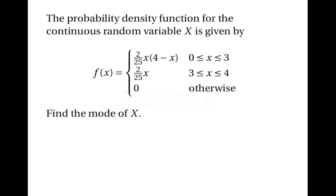Let's look at one more example. This time, suppose we have a probability density function defined in three pieces. When x is between 0 and 3, f(x) = (2/25) · x · (4 − x). When x is between 3 and 4, f(x) = (2/25) · x. And f(x) = 0 everywhere else. In this case, it's harder to find the mode because we don't know what the graph looks like.